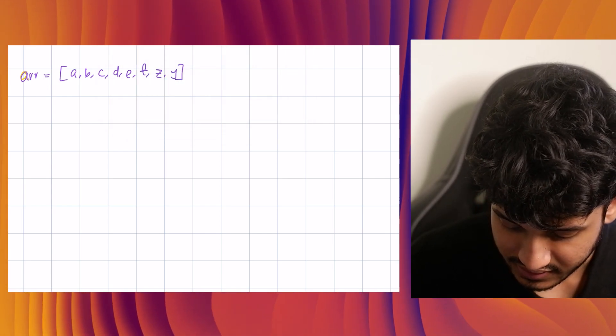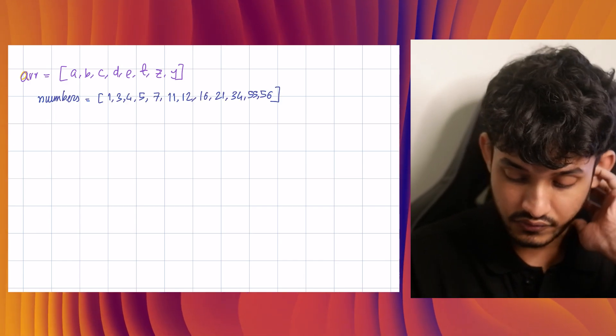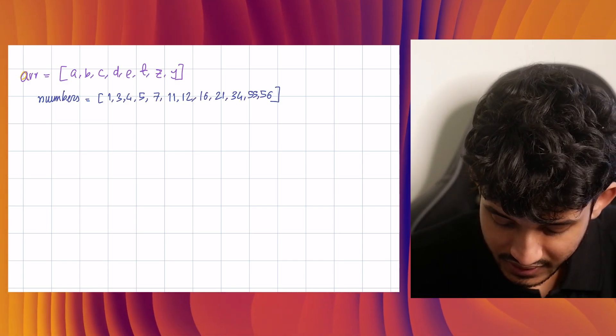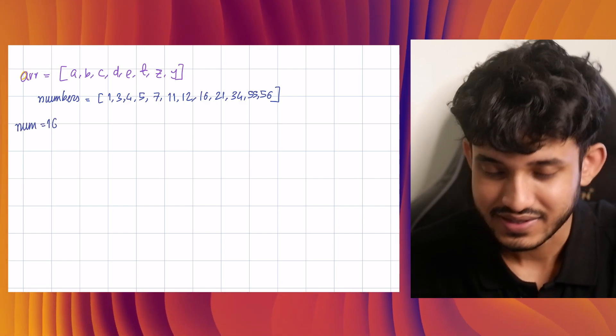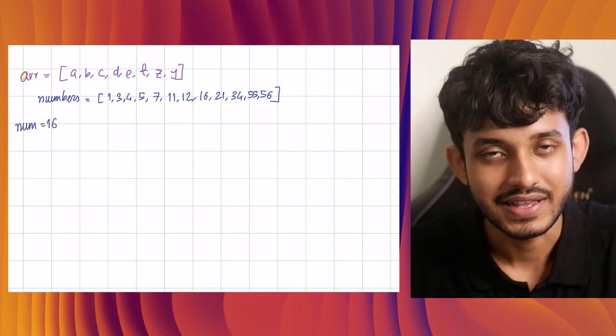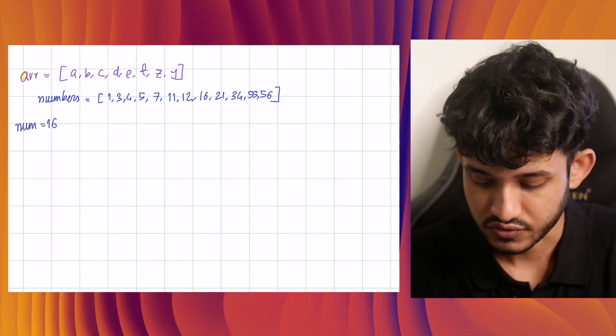Let's take an array called numbers, something like this. Now, if we want to find that a number, maybe the number can be 16, if that is inside this list or this array, what we generally do is we start searching from the first.